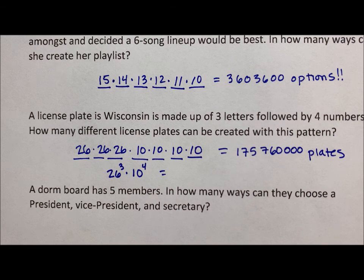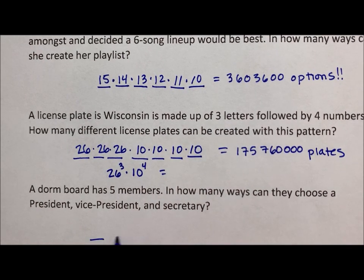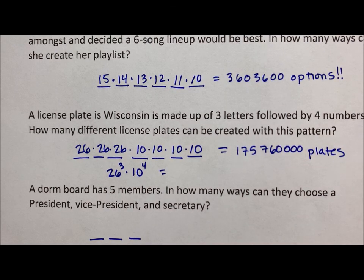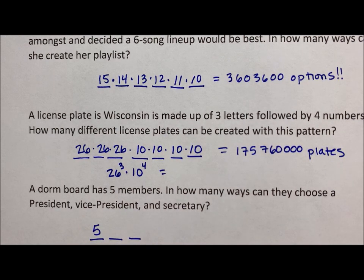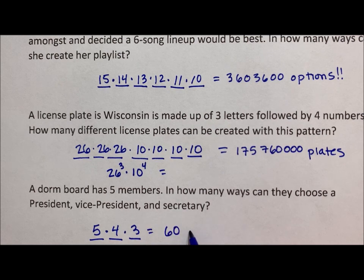Last but definitely not least, let's say a dorm board has five members. In how many ways can they choose a president, vice president, and secretary? They choose the president first from the five members, so there are five options for president. Once the president is chosen, there are four people left for vice president. Once the VP is selected, there are three people left for secretary. Five times four times three means there are 60 ways for that executive branch.